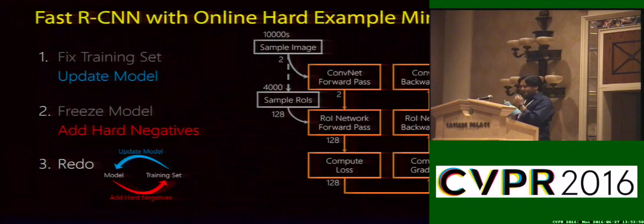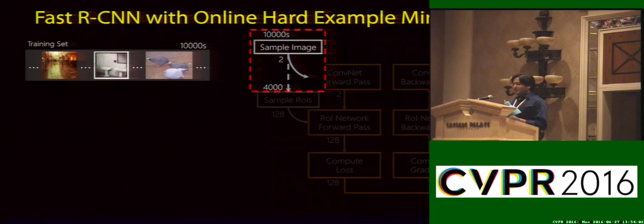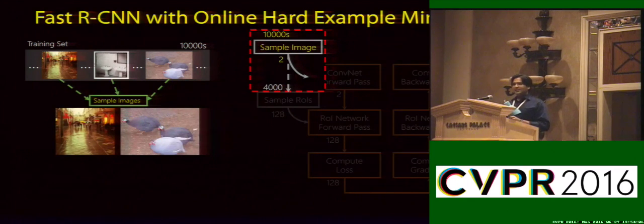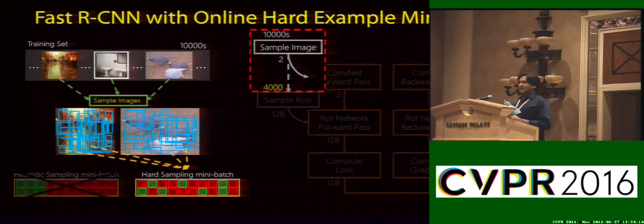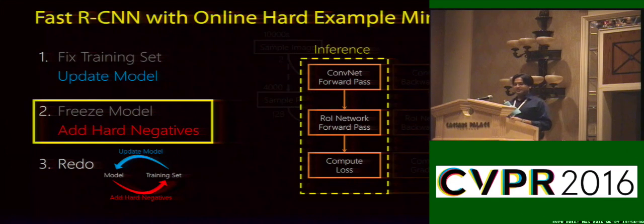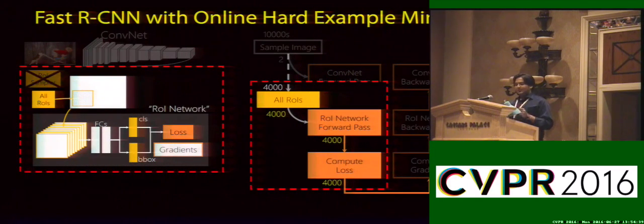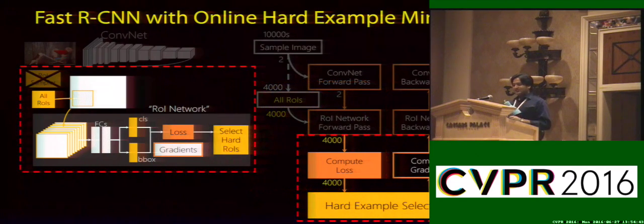Now, how can we incorporate bootstrapping in this framework? Our main contribution is figuring out how to combine the alternating steps of bootstrapping with standard online SGD. The key is taking advantage of the problem structure — even though we sample a small number of images per iteration, each image has thousands of example regions. So instead of heuristically selecting examples for our mini-batch, we select the hard examples. During one iteration of SGD, we are already freezing our model for the forward pass. So instead of heuristically sampling regions, we use all regions during forward pass and compute their losses, then select the hard regions and compute gradients only for those selected hard regions.